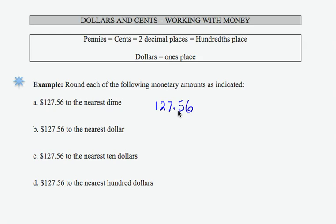So round to the nearest dime, that's the tenths place. We're going to focus on these two digits right here. The five is in the tenths place, the six is to the right. Because the six is bigger than five, I'm going to round this to 127.60. And that is rounded to the nearest dime.